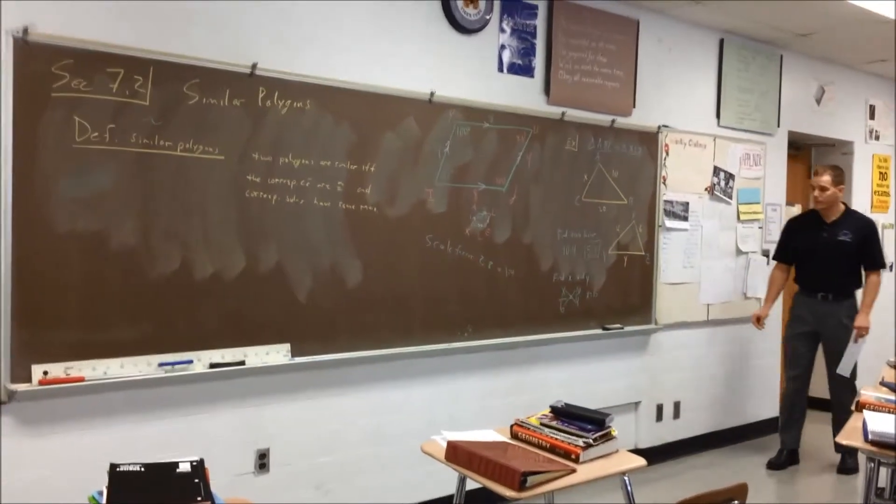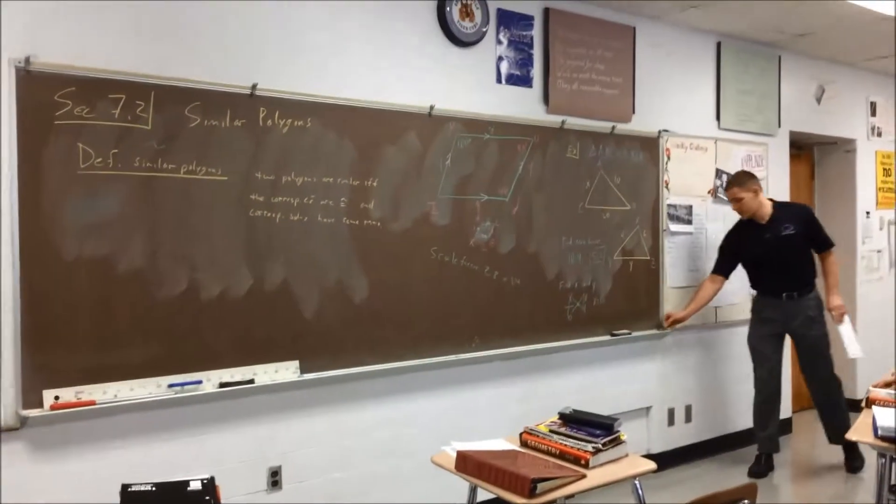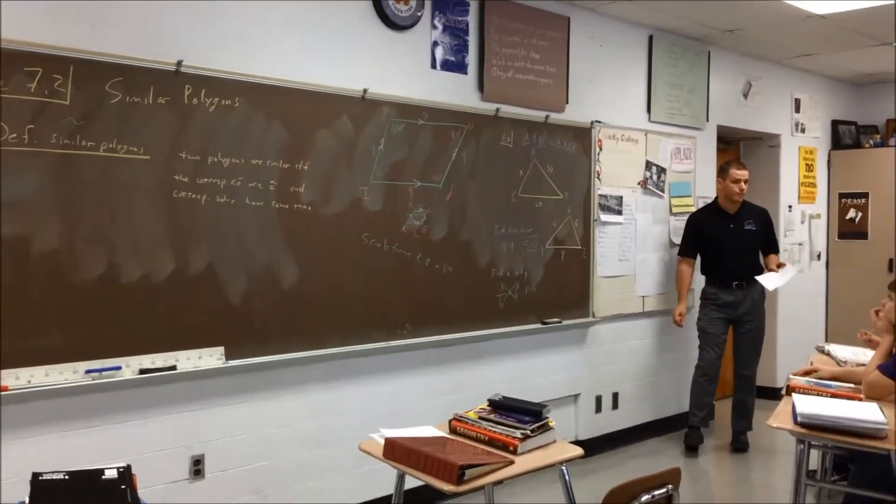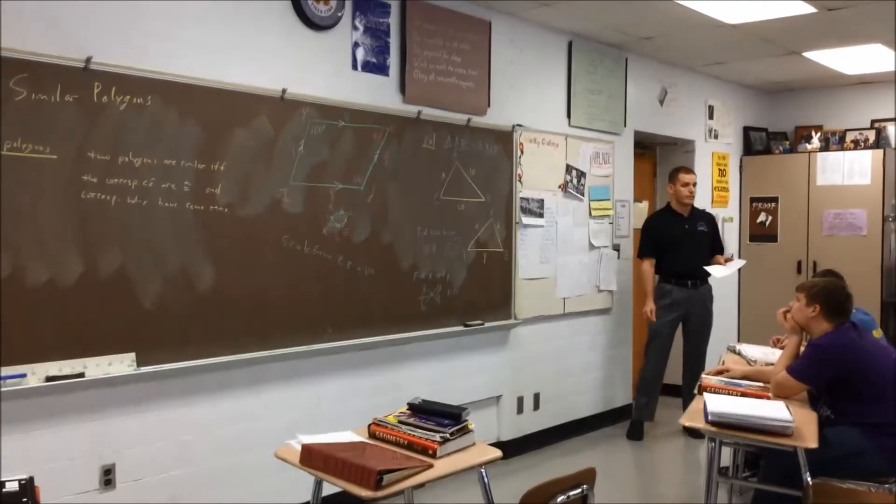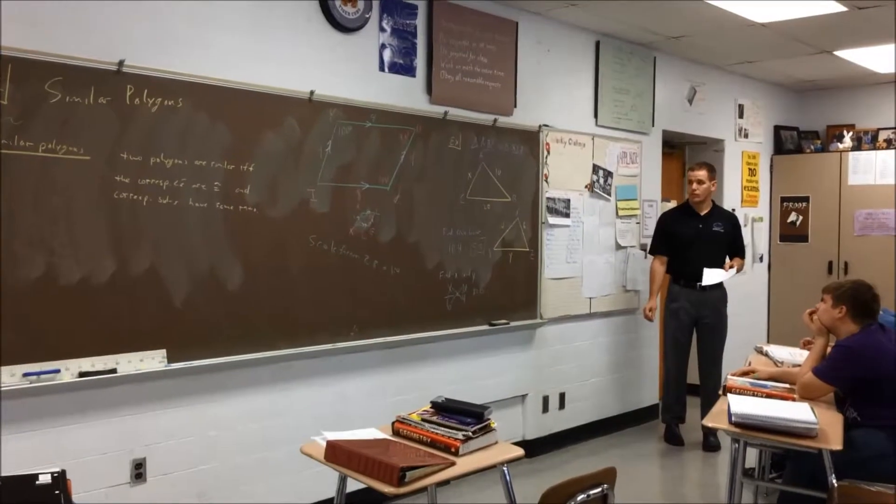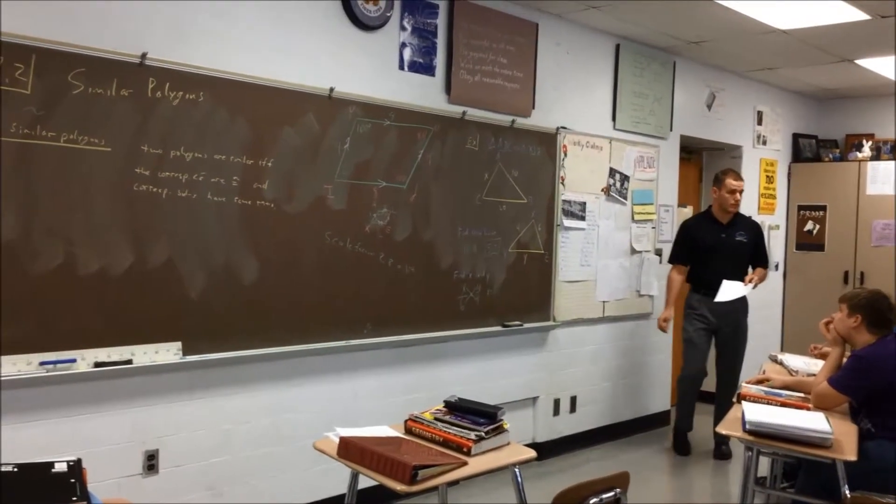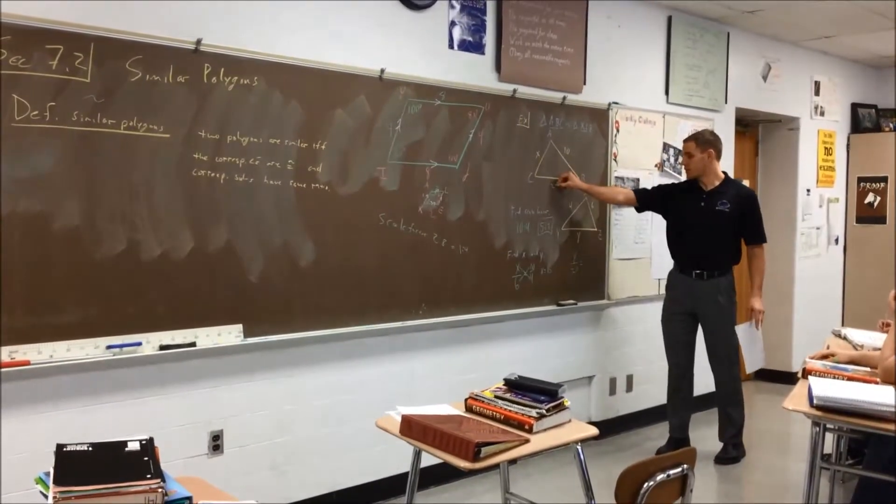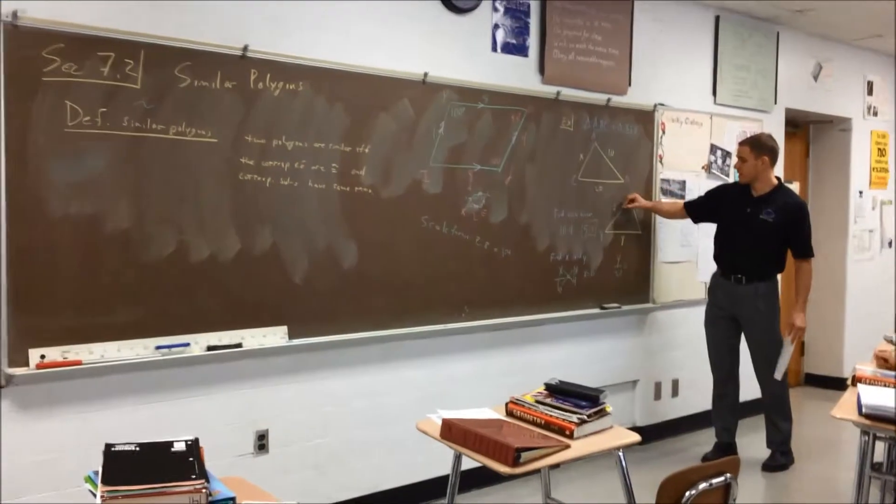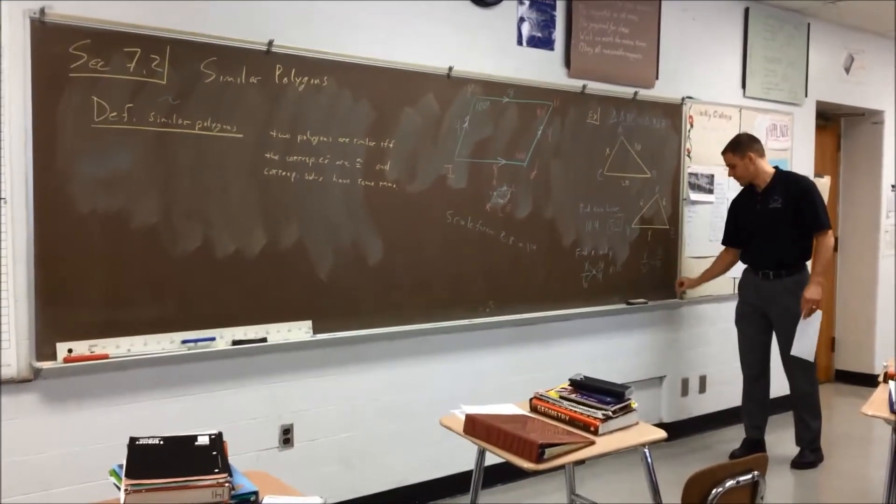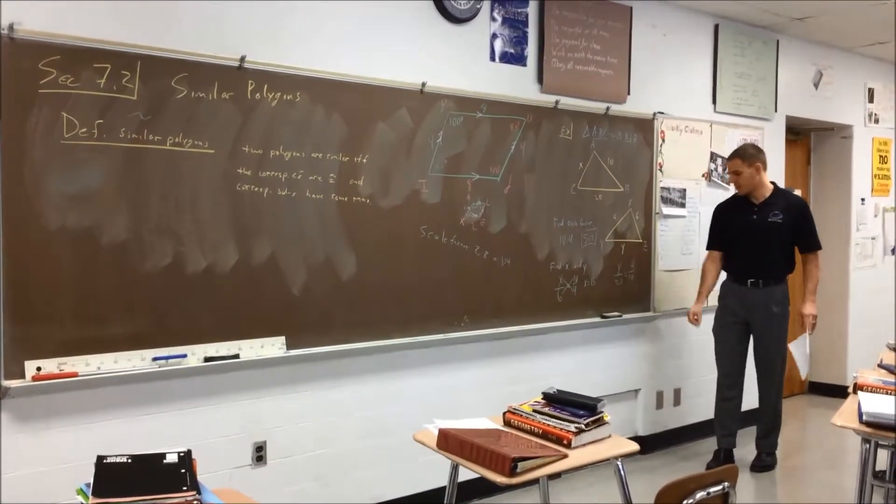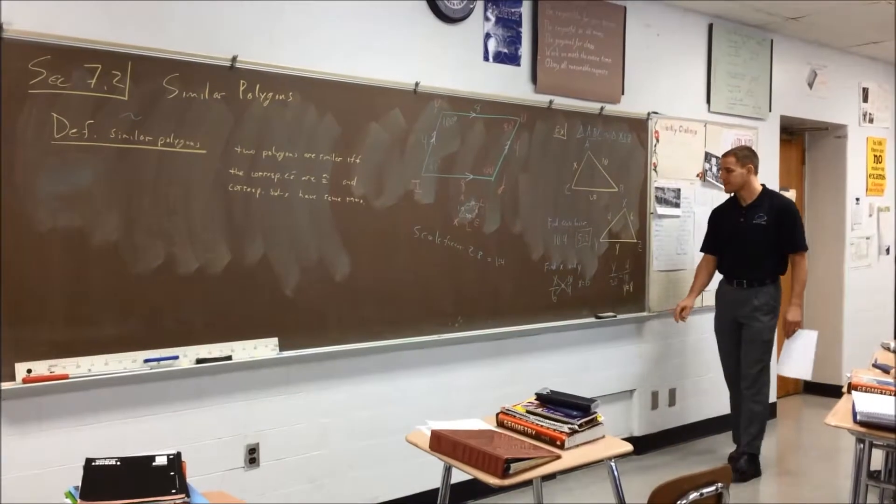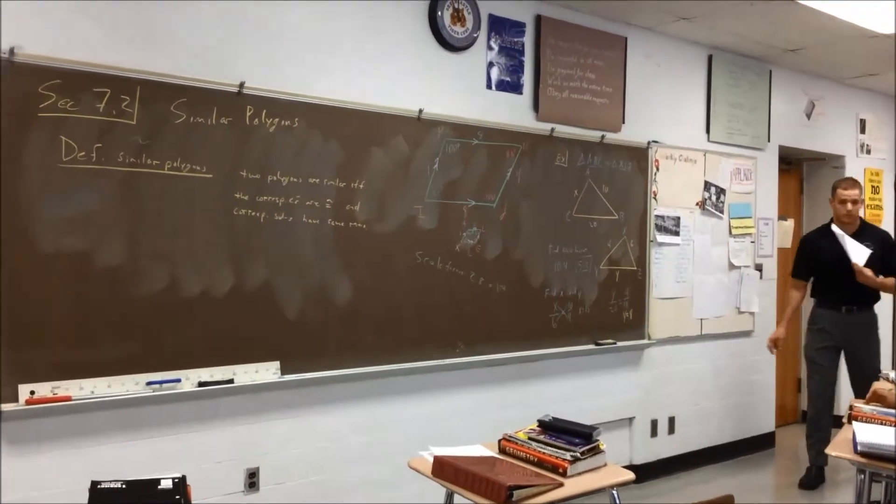Raise your hand, tell me the proportion to set up to find y. y matches up with 20, so y over 20 is equal to, not 6 over 10, sorry, 4 over 10. You cross multiply, so 10y is going to equal 80, so y is going to equal 8. Pretty simple.